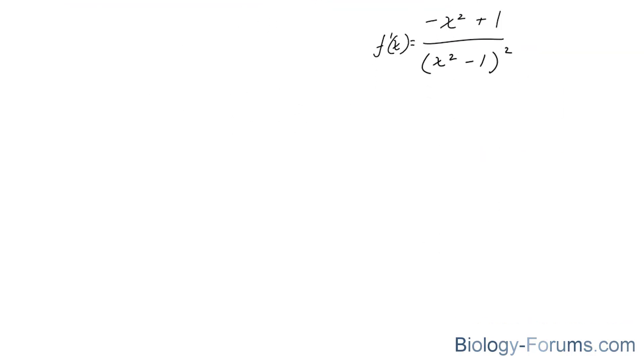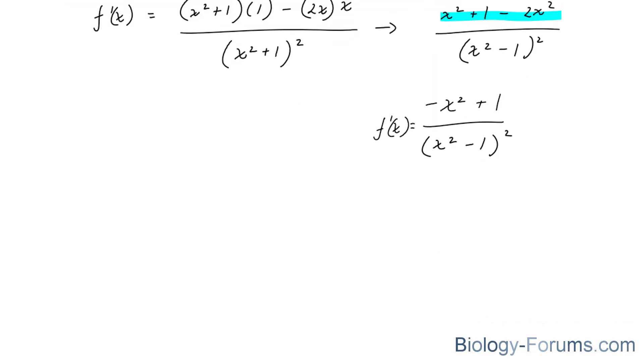we'll next set this equal to 0. Now, once again, all I'm doing is exactly what I did in our previous video to find the critical numbers. So, 1 minus x squared, I just rearranged this, x squared minus 1 to the power of 2 is equal to 0. I'm going to solve for x. The first thing I'll do is multiply both sides by the denominator. And by doing that, I end up with 1 minus x squared is equal to 0.